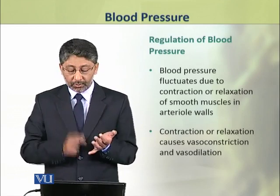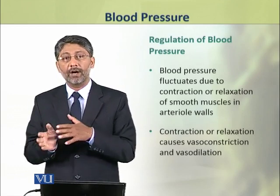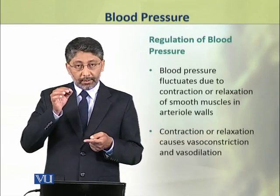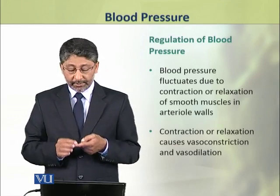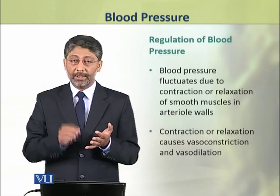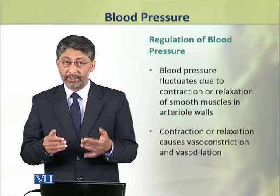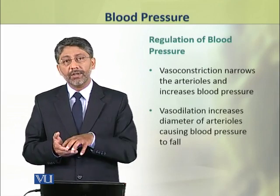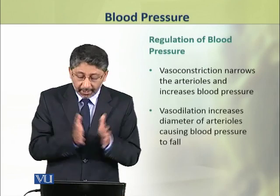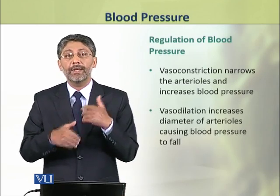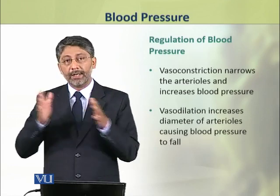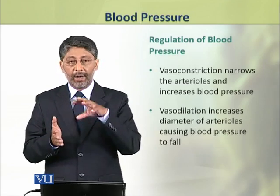Blood pressure fluctuates due to the contraction or relaxation of smooth muscles of the arterioles. In the walls of arterioles, contractions and relaxation of smooth muscles cause either vasodilation or vasoconstriction. Vasoconstriction narrows the lumen of arterioles and causes blood pressure to increase, whereas vasodilation increases the diameter of arterioles, causing blood pressure to fall.